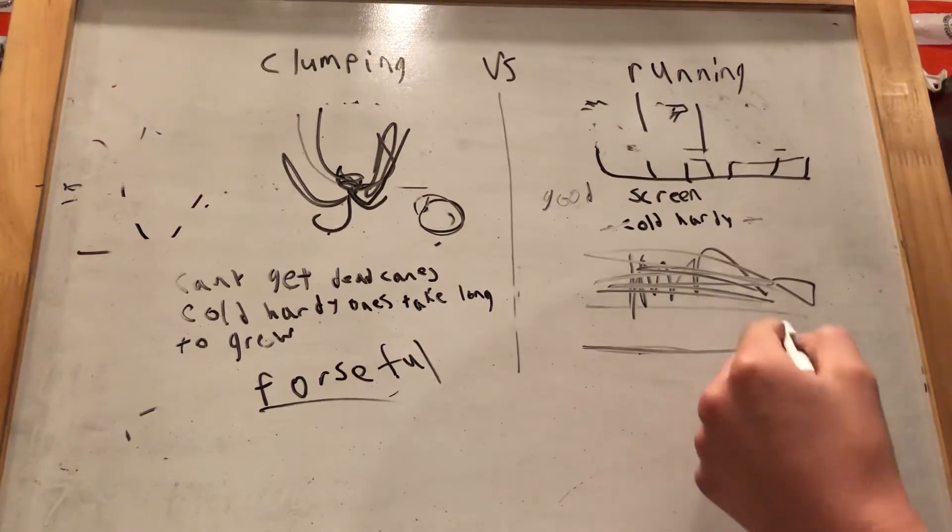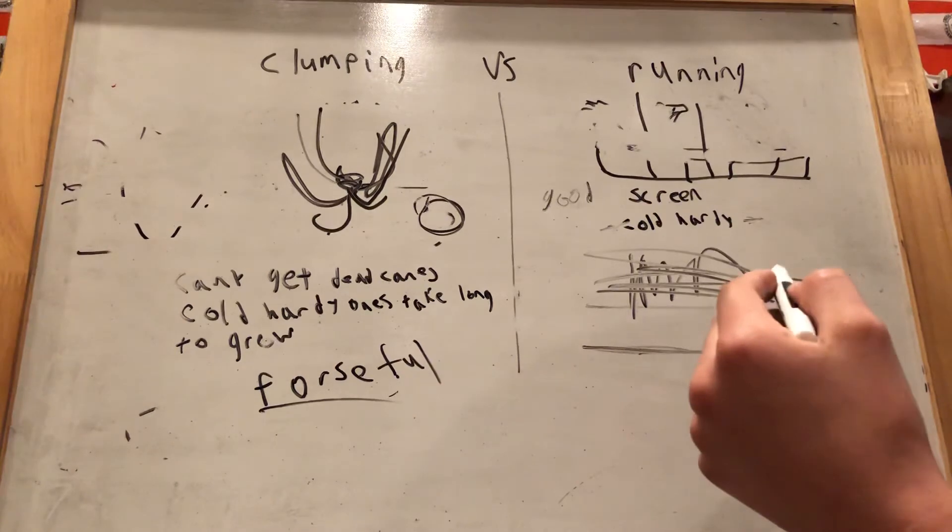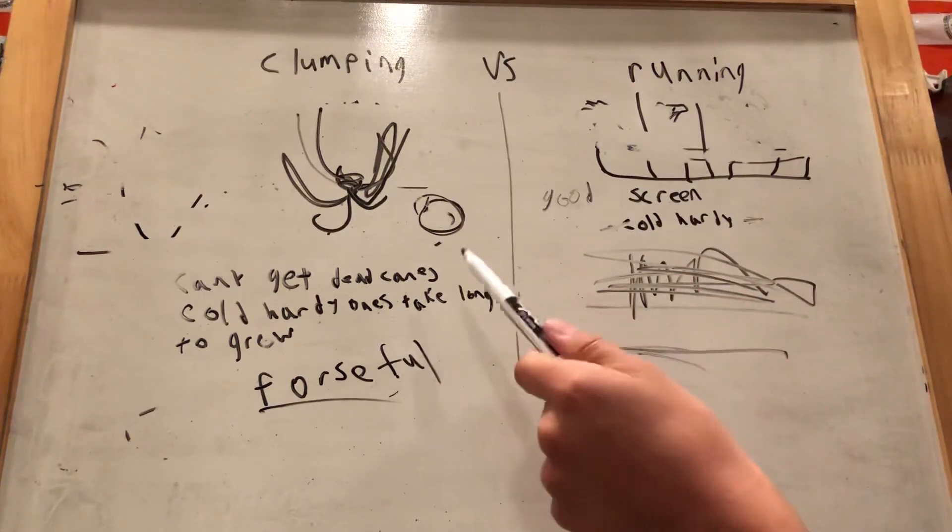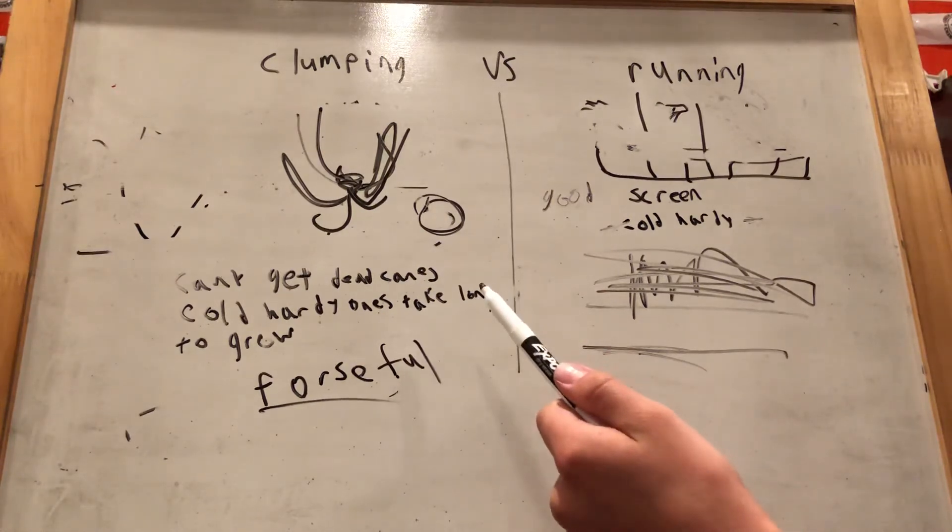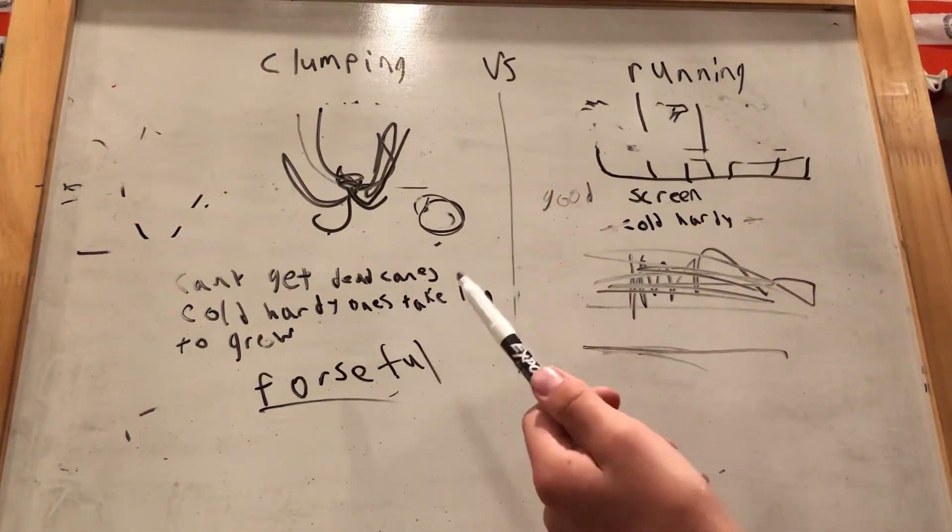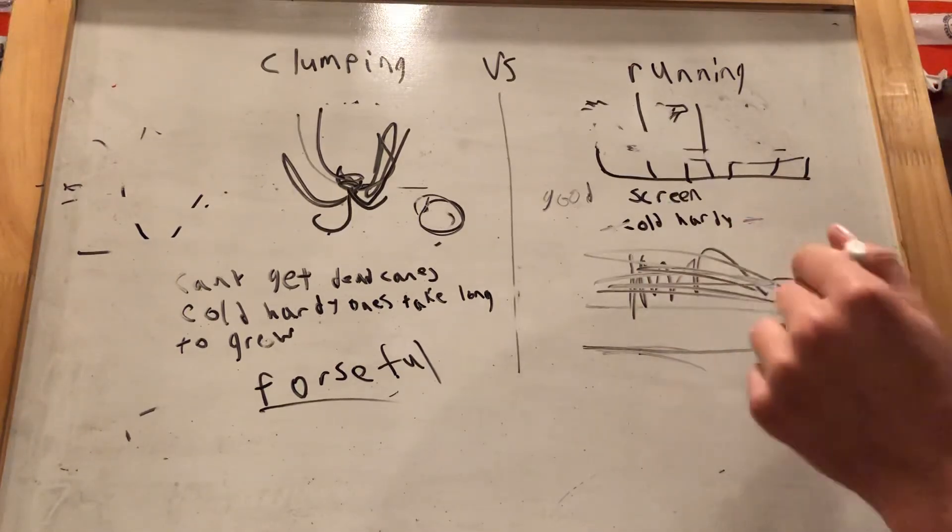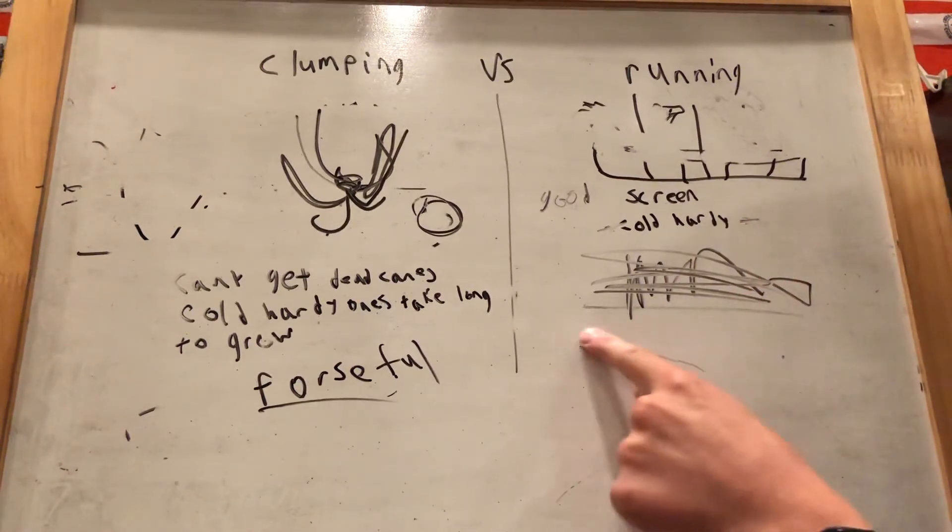If you don't want to put a bamboo barrier in or figure out how to control it, which will be our next video, then clumping bamboo might be the way to go if it's in the middle of your yard and you just want bamboo, not for screening at all. This could be a good one.